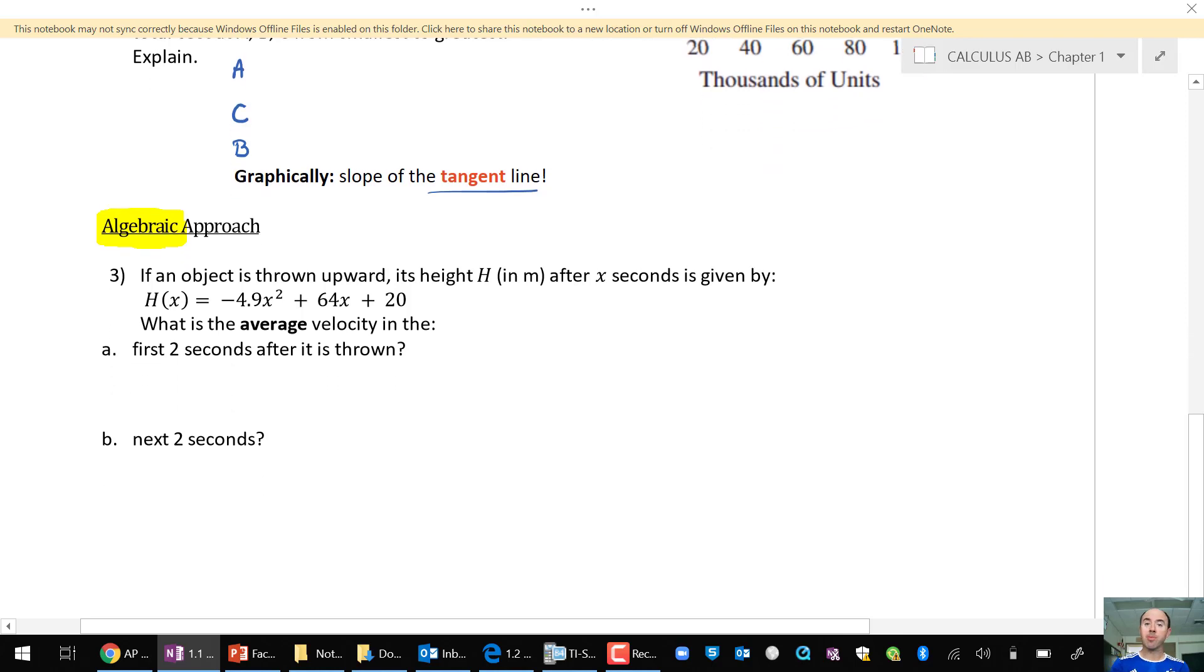Here there's no picture, there's no data table, but there is a function. And this is a function that is given in height. After x seconds, an object is thrown upward. Find the average velocity, part A, in the first two seconds after it is thrown.